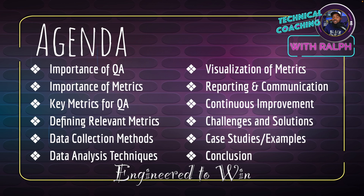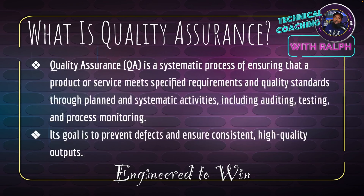What is quality assurance? QA is a systematic process of ensuring that a product or service meets specified requirements and quality standards through planned and systematic activities including auditing, testing, and process monitoring. The goal of QA is to prevent defects and ensure consistent, high-quality outputs. This is a quick overview — today is really about QA metrics.